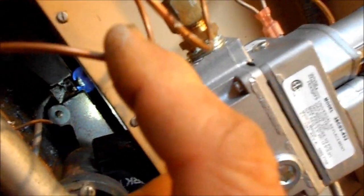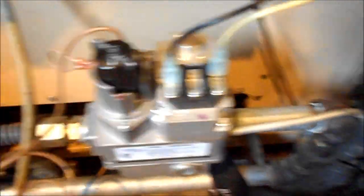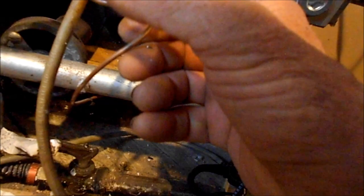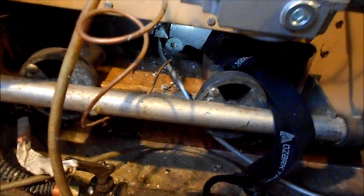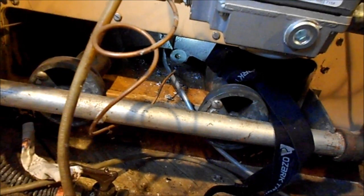Now if you let go and that thing doesn't stay lit, it's going to be this thermocouple. This has a thermocouple on it. Some of them will have a thermopile which is a wire that requires about seven millivolts off that thermopile. Sometimes the thermopiles go out.